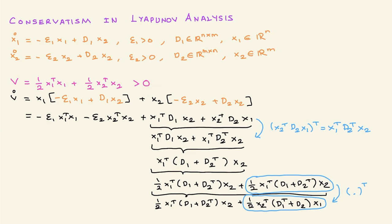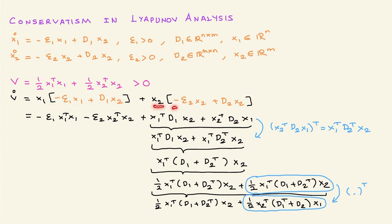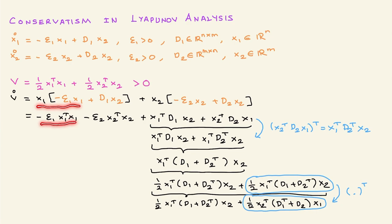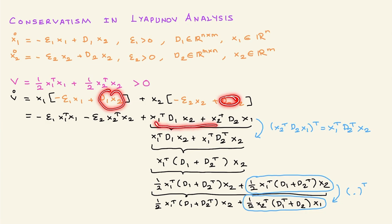Taking the Lyapunov derivative V-dot: x1-transpose times x1-dot — plugging in the expression for x1-dot — and x2-transpose times x2-dot — plugging in x2-dot. I am grouping two terms together here and the remaining terms separately, and then for a reason I will explain in the next slide, I am doing some algebraic manipulations.